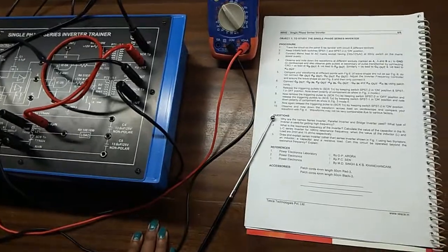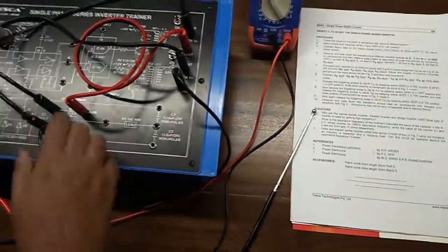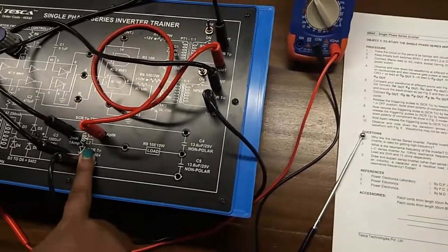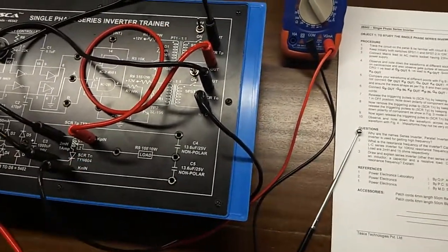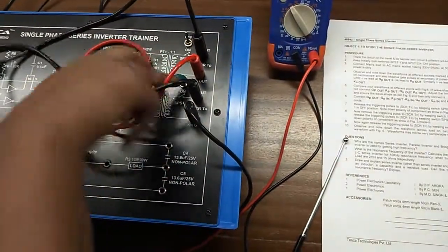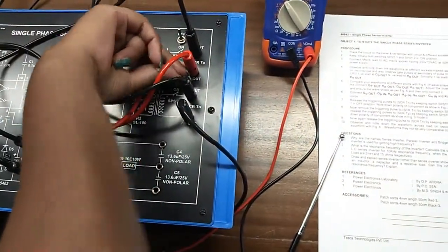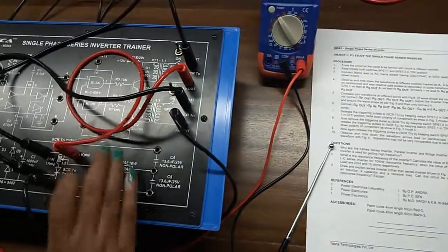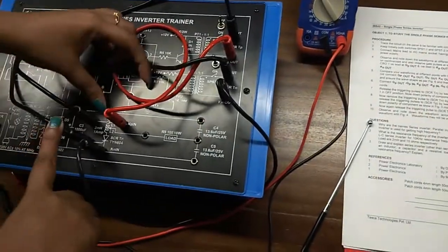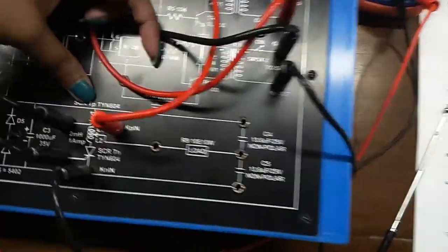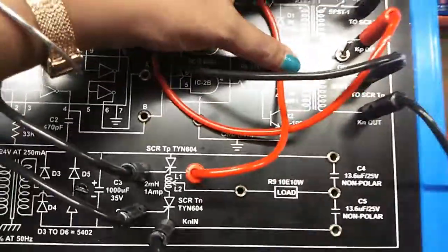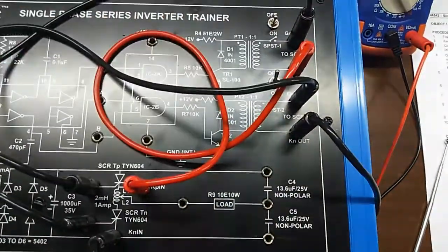Remove the triggering pulses to SCR TN by keeping the switch SPST 2 in off position, and release the triggering pulses to SCR TP. You can see here this first one by selecting the switch SPST 1 in on position.